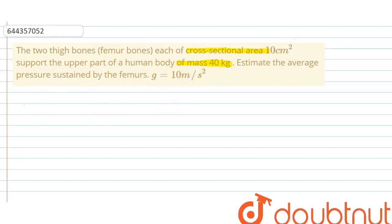So you know that pressure equals force upon area. Mass is 40 kg, so force exerted equals m times g, which is 40 times 10, equals 400 newton.